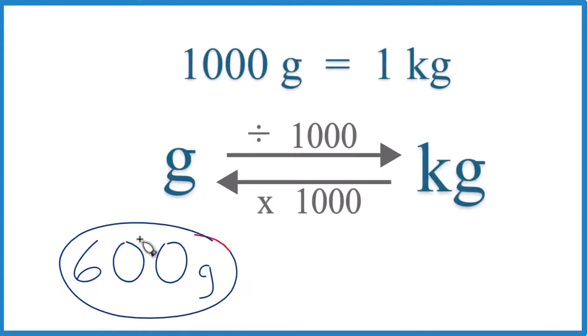If you need to convert 600 grams to kilograms, here's how you do it. So you need to memorize that 1,000 grams equals 1 kilogram.